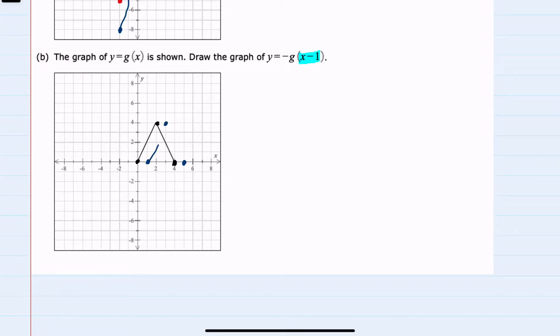But then we still have the negative outside, and we recall that that has the effect of flipping across the x-axis. So our final graph will be reflected here. And this is the graph after both transformations.